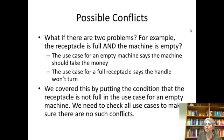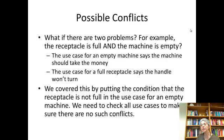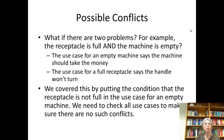What if there are two problems at once? For example, the receptacle is full and the machine is empty. We said for an empty machine the machine should take the money, but for a full receptacle the handle won't turn. We actually covered this by putting in the condition that the receptacle is not full in the case of an empty machine, but we do have to think about these interactions. Which rule should take precedence? Make sure we understand and say that in the requirements.